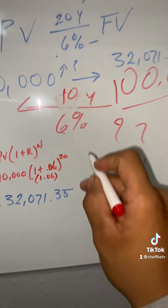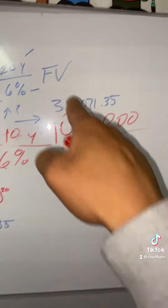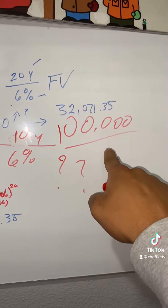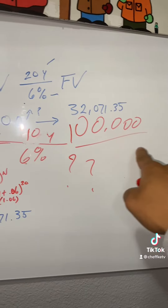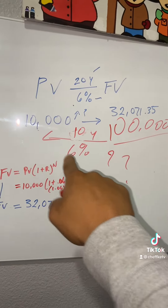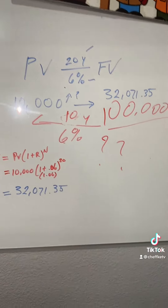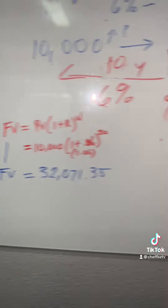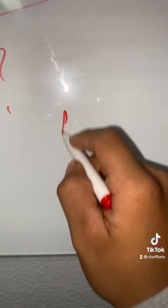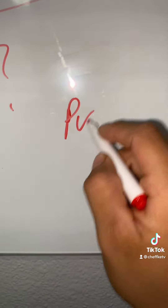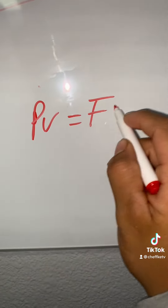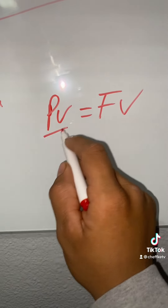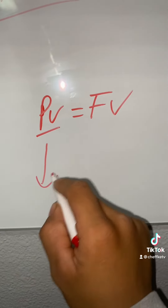Let's take 10 years — let's turn a future value of $100,000 over 10 years at 6% into a present value. This equation is going to be a little different. We're turning future value into present value. So we got the present value, which is going to drop down.